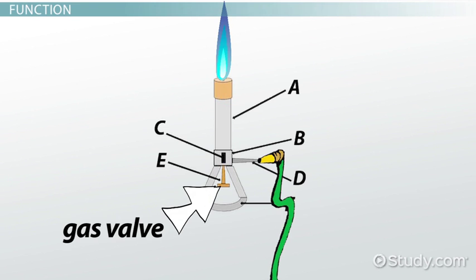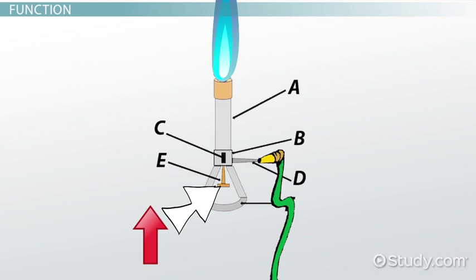Adjusting the gas valve on the Bunsen burner changes the volume of gas flow. The more gas entering the burner, the larger the flame.